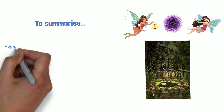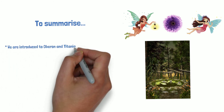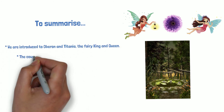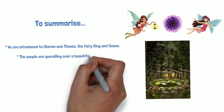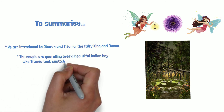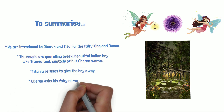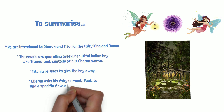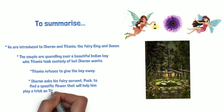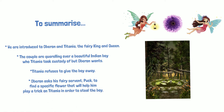To summarise, we are introduced to Oberon and Titania, the fairy king and queen. The couple are quarrelling over a beautiful Indian boy who Titania took custody of but Oberon wants. Titania refuses to give the boy away. Oberon asks his fairy servant Puck to find a specific flower that will help him play a trick on Titania in order to steal the boy.